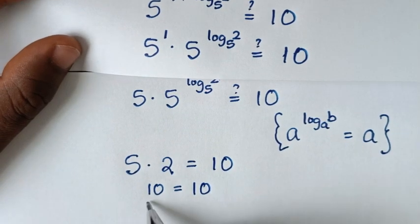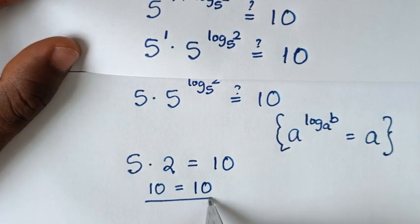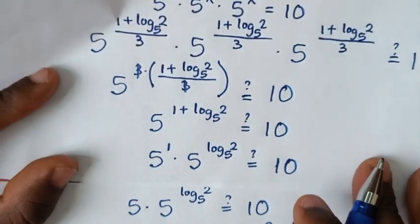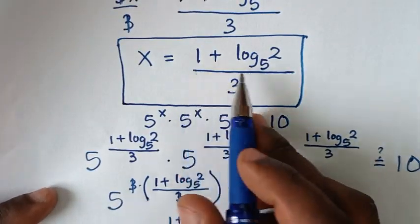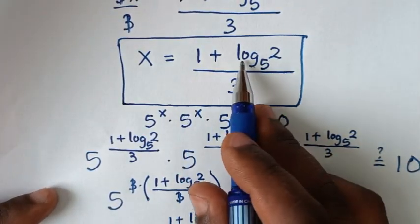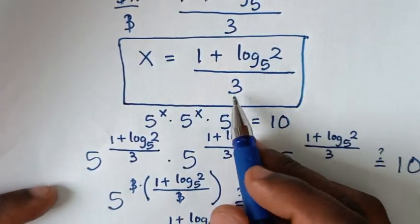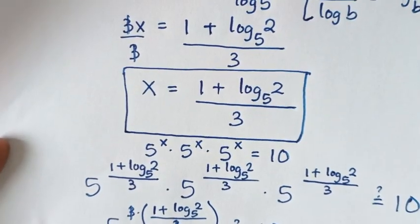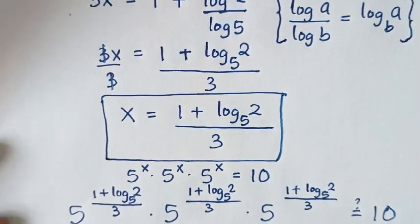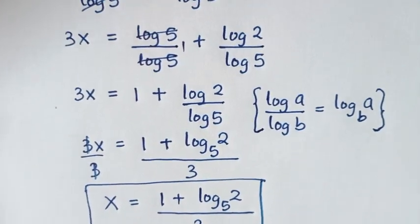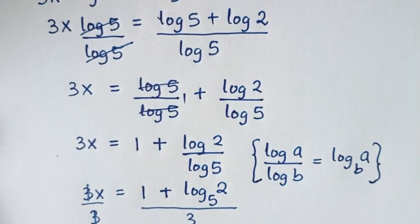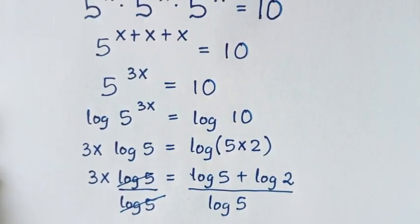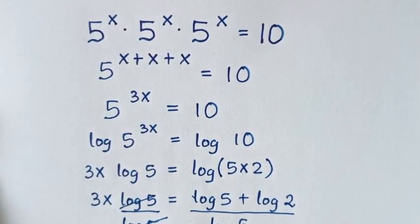You can see the left side and right side are equal, so it is confirmed that the value of x is 1 plus log of 2 base 5 over 3. Subscribe to my channel and see you in the next video. Bye-bye!